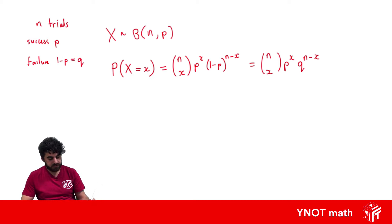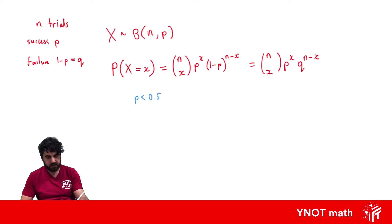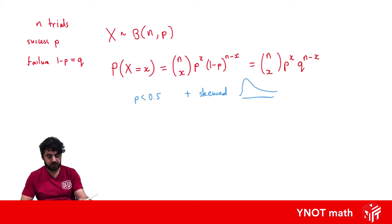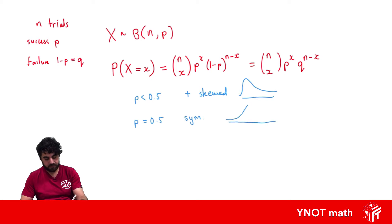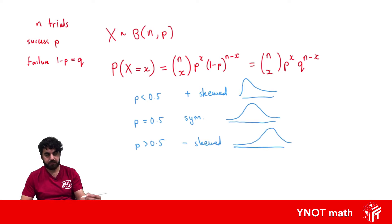Some things to note before we get into examples: if the probability of success is less than 0.5, we'll have a positively skewed distribution with data bunched up at the lower end. If the probability is exactly 0.5, we'll have a symmetrical distribution. And if the probability is greater than 0.5, we'll have a negatively skewed distribution with data bunched up at the higher end.